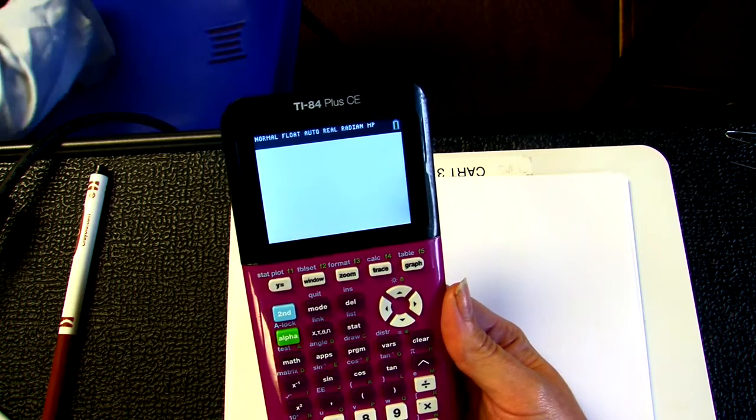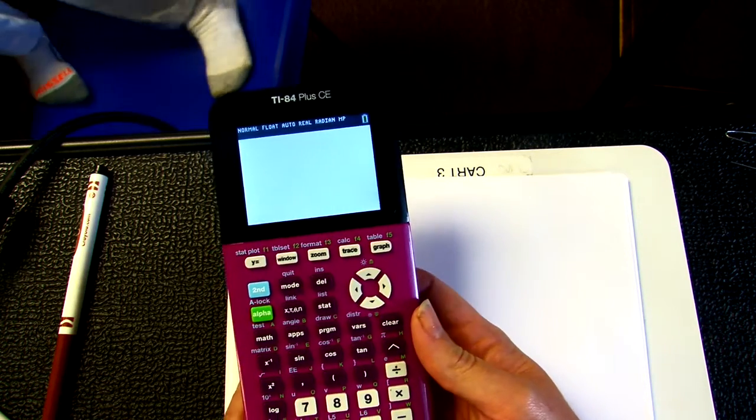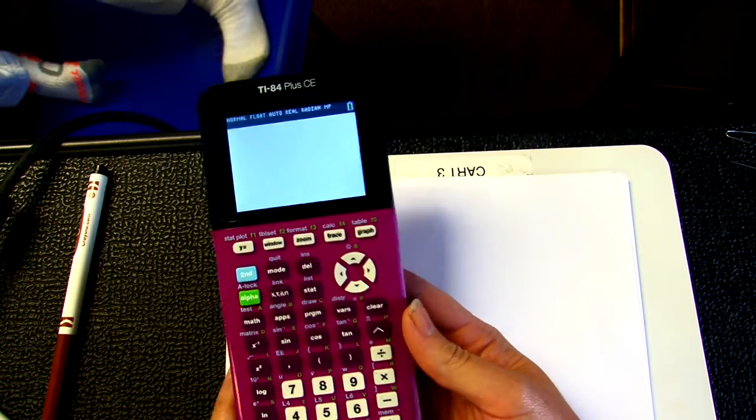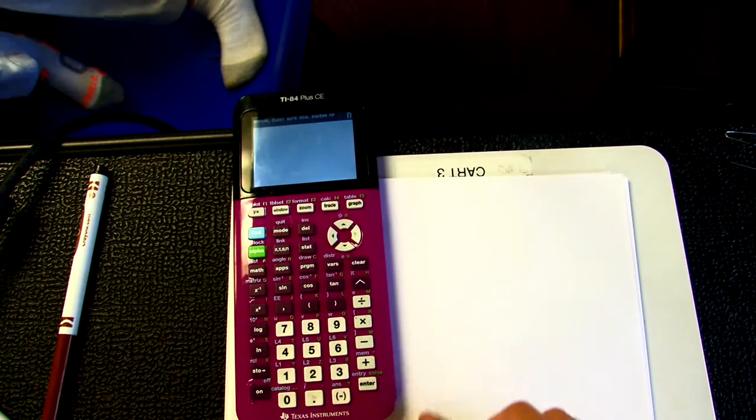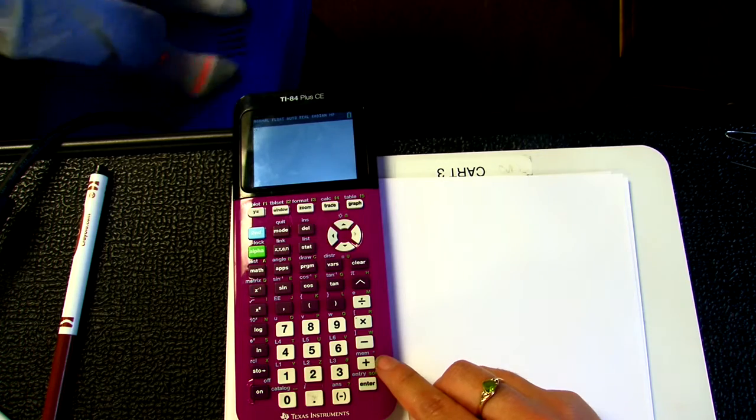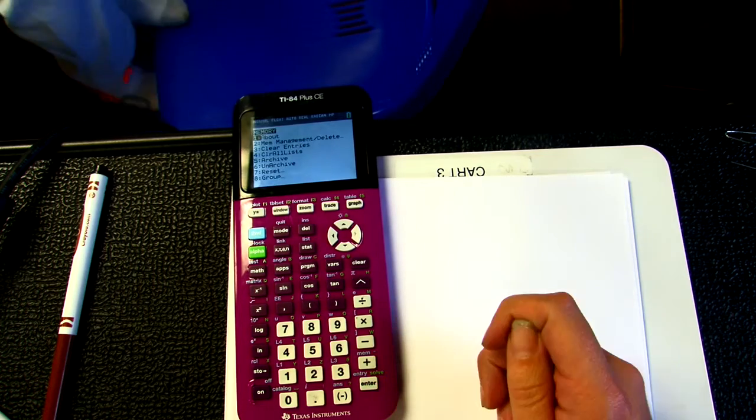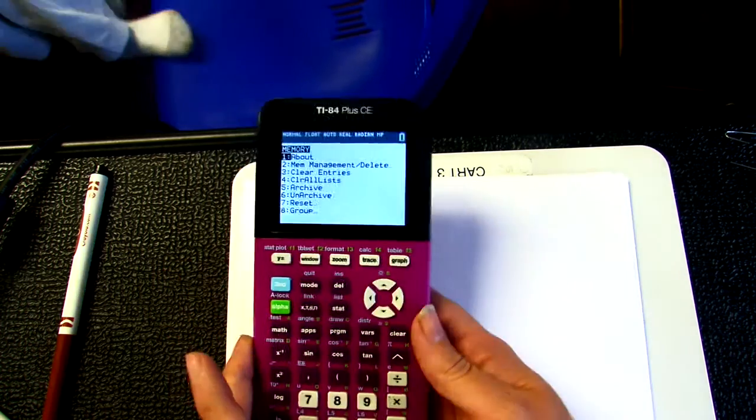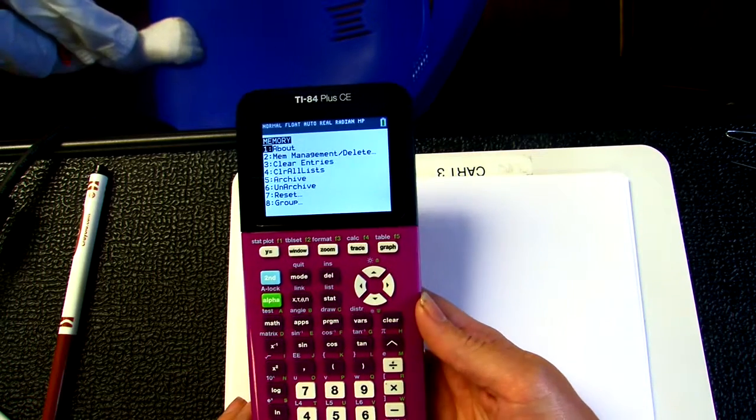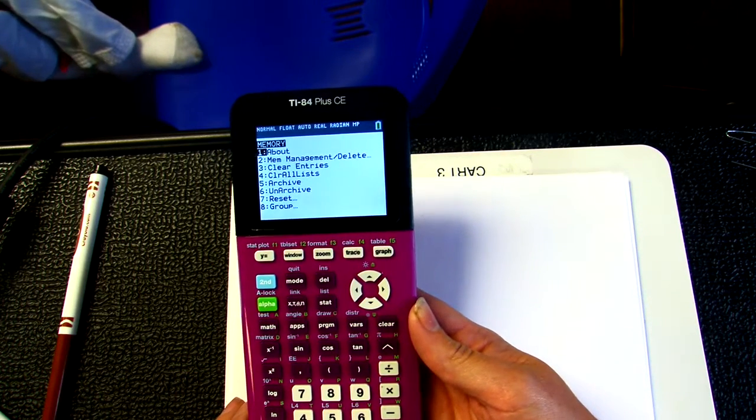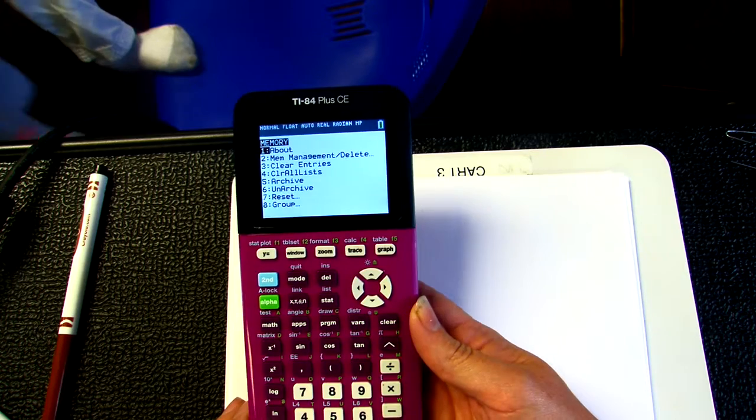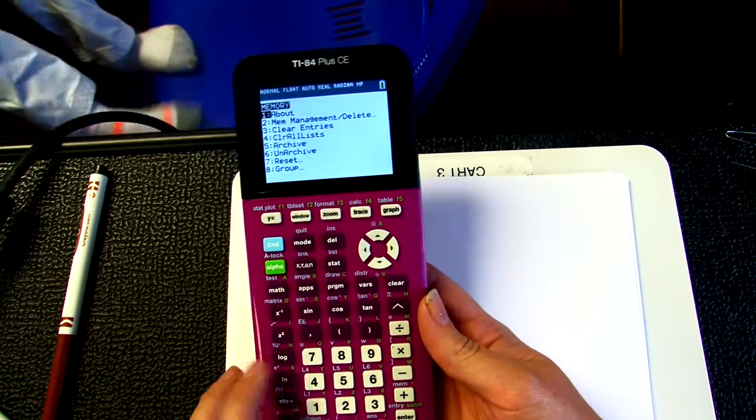Then you're going to hit the Plus button. It's down here, bottom right, Second button up. That's Plus. On the screen, after you hit Plus, this screen will show up. The next button you're going to press is button number seven for Reset. You hit seven, and then your screen will show this.